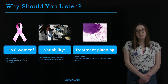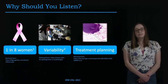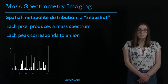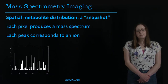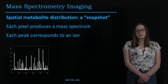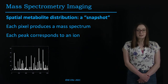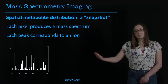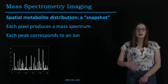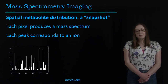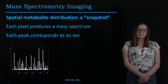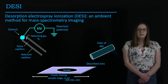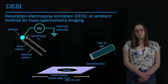Mass spectrometry imaging is seen as a potential solution for rapid breast cancer detection. It provides information on the spatial metabolite distribution throughout a tissue. Every pixel of these images produces a mass spectrum, and every peak of a mass spectrum corresponds to an ion. These ions can be mapped to metabolites and biological processes. In this project, we work specifically with desorption electrospray ionization, or DESI.